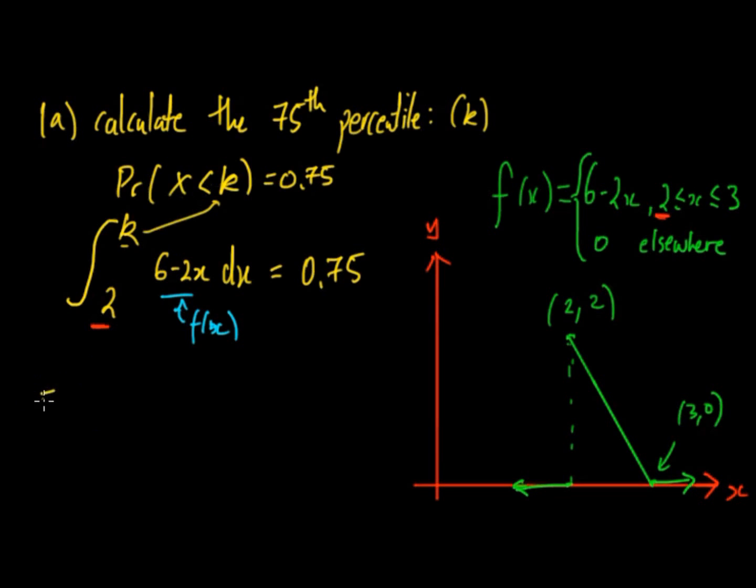So we solve this and obviously anti-diff, we get 6x minus x squared, because 2 comes down so you get minus 2x. K, 2 equals 3 on 4.